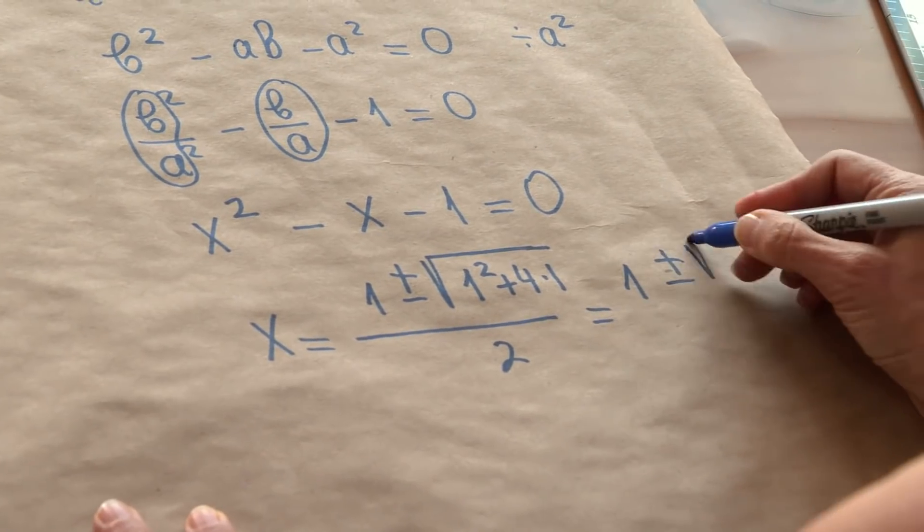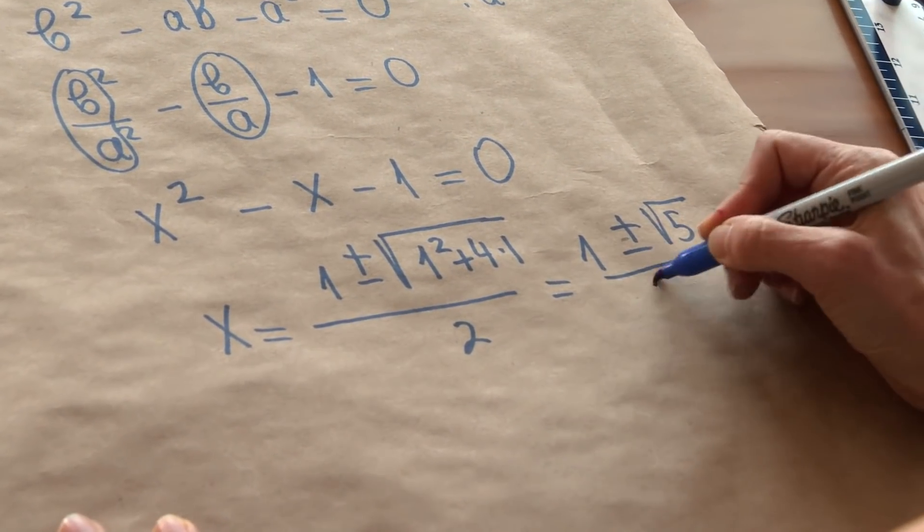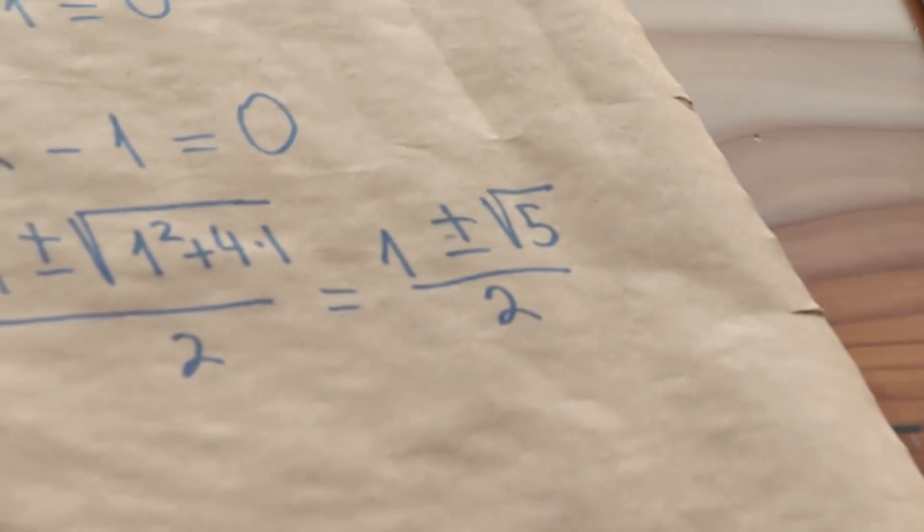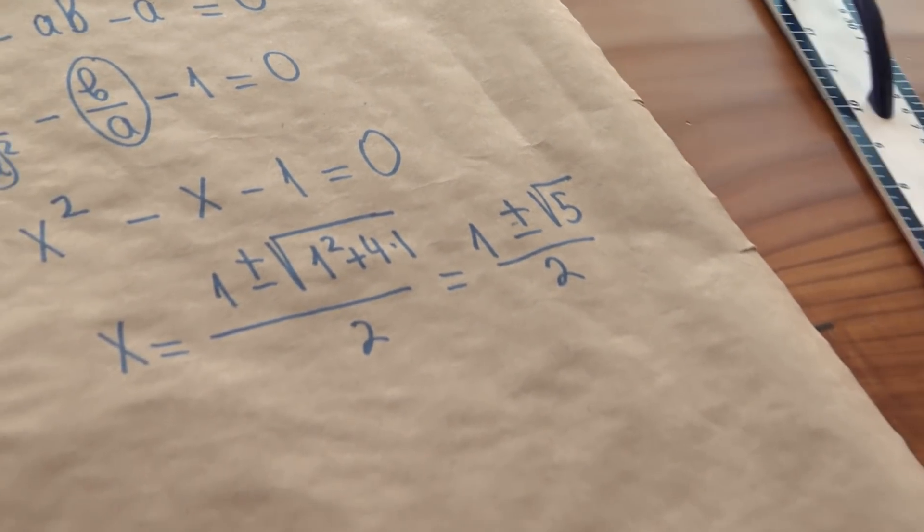Hmm, wait, hold on, hold on, we still have two choices? Is it possible that for some pentagons you get one of those roots and for other pentagons the other root? I don't think so. So, one of those roots is utterly impossible.